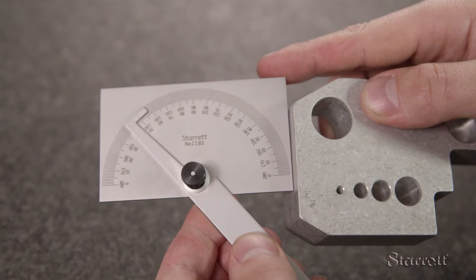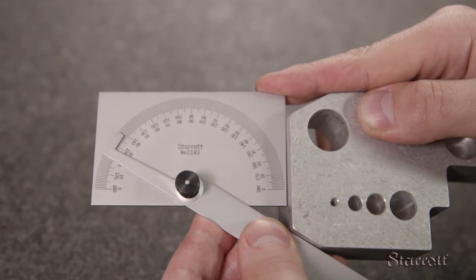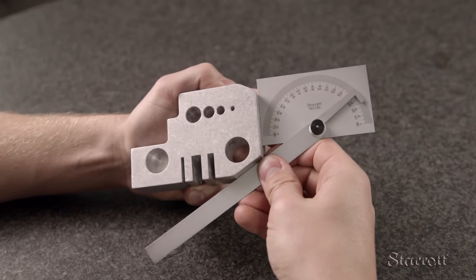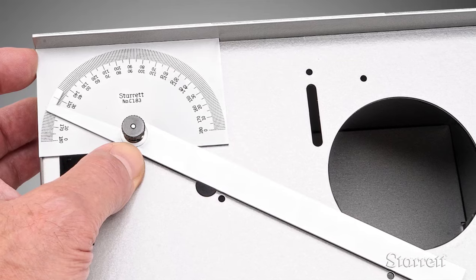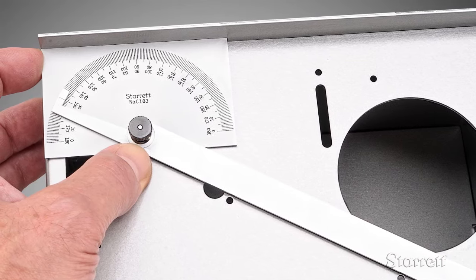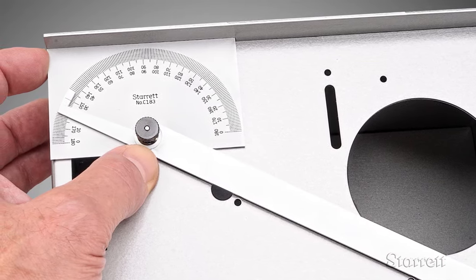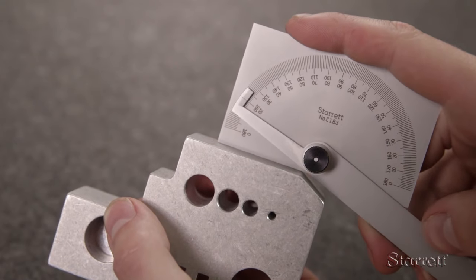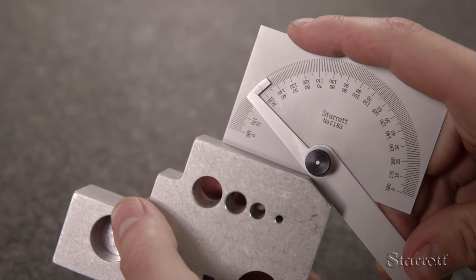The flat back and square head add to its versatility. You can use either side or the top against a reference surface to set or determine an angle. Probably most common, hold the bottom side of the head against an edge.